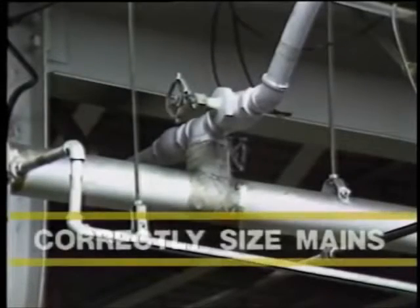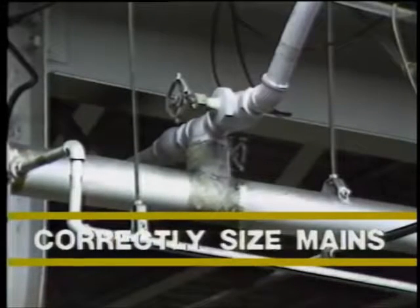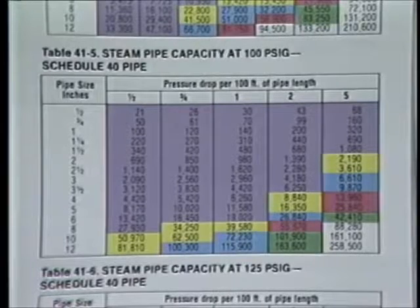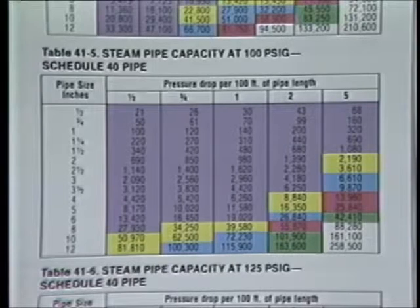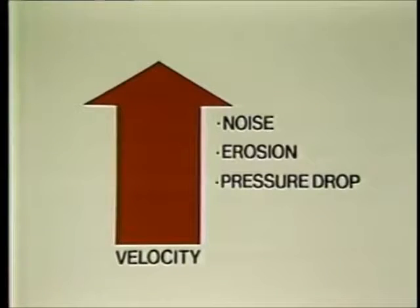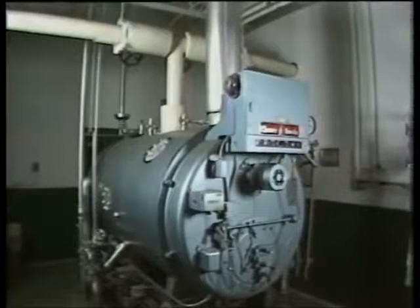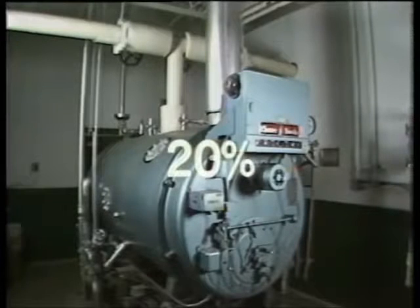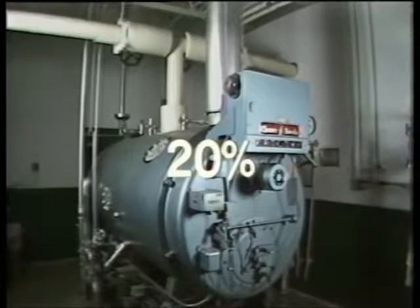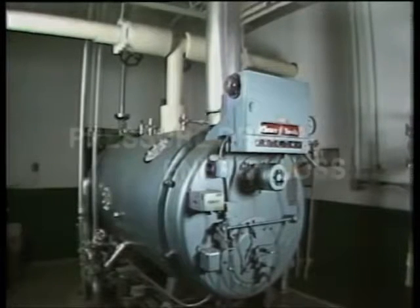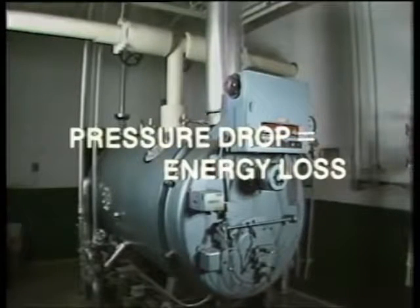Steam mains must be correctly sized to ensure efficient operation and to minimize maintenance costs. The size of the steam main piping is determined by the allowable pressure drop and velocity for a specific pressure. As velocity increases, so do noise levels, erosion potential, and the amount of pressure drop. The greatest pressure drop in the distribution system should not exceed 20% of the maximum boiler pressure, radiation and friction losses included. Remember, pressure drop is energy loss.